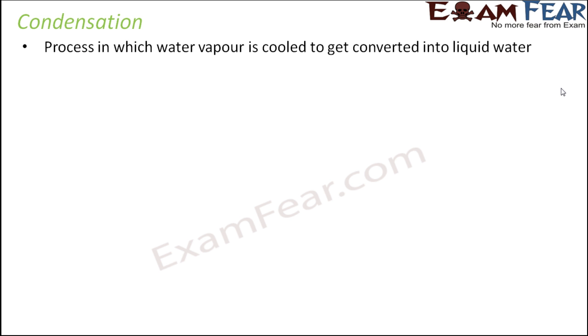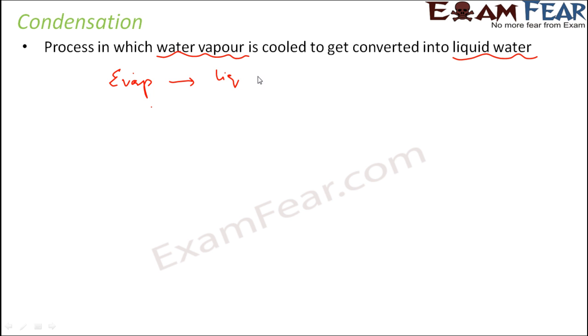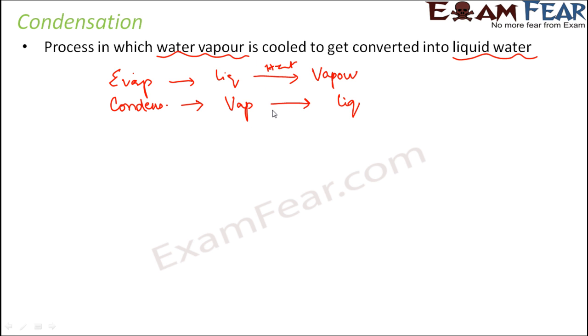When we talk about evaporation, a question might come to your mind: the way liquid water is getting converted to vapor, is the reverse also possible? Yes, it is. That process is called condensation, where water vapor is cooled to get liquid water. In evaporation, we had liquid water and we heated it and it got converted into vapor. Condensation is exactly the opposite — we are going to convert vapor to liquid. For liquid to vapor we heated it, so to convert vapor to liquid we need to cool it. That process is condensation. These are just the opposite of each other.